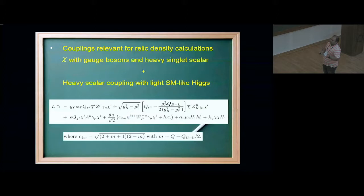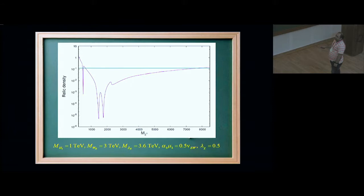Now let's talk about the relic density for the dark matter. The couplings that are essential for calculation of the relic density are these chi couplings with the gauge bosons and the heavy singlet scalar, and the heavy singlet scalar coupling with the standard model Higgs. This is the alpha three mu three coupling that I was talking about. Then there is this lambda chi coupling, and these are the couplings of the chi with the gauge bosons.